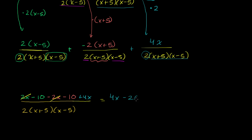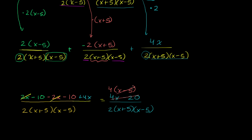So we have 4x minus 20 over 2 times x plus 5 times x minus 5. We can factor out a 4 from the numerator: 4 times x minus 5. Assuming x is not equal to positive 5, we can divide numerator and denominator by x minus 5 — those cancel out. Then we divide numerator and denominator by 2: 4 divided by 2 is 2, and 2 divided by 2 is 1. So we're left with 2 in the numerator and x plus 5 in the denominator.